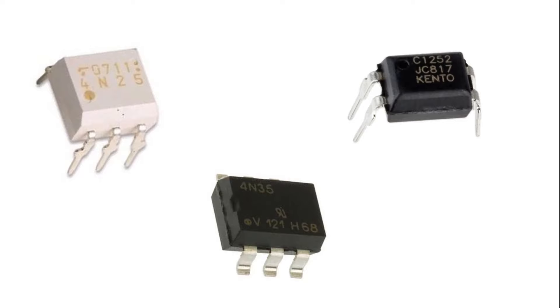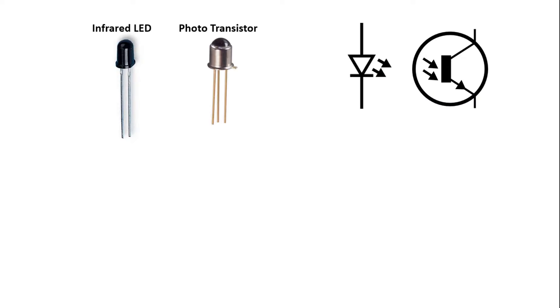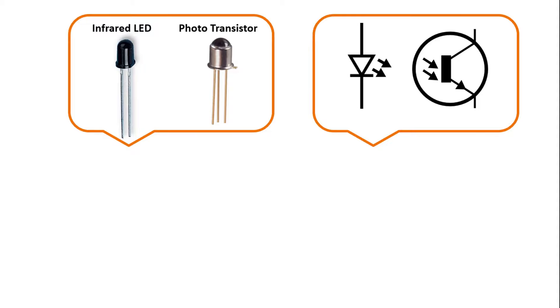So, let's see how is the structure of optocoupler. For example, the 4N25 optocoupler consists of an infrared LED and a phototransistor.